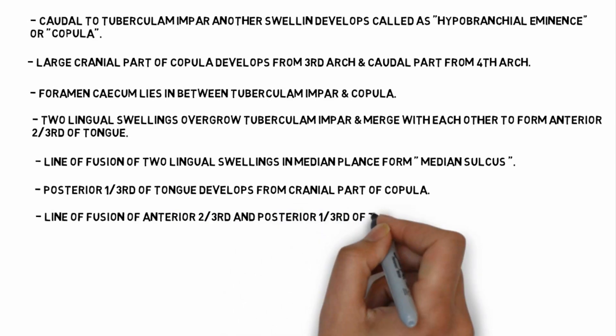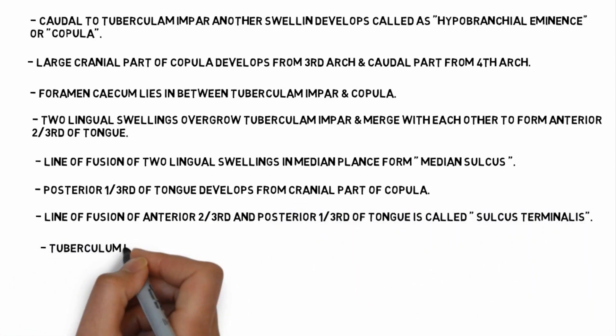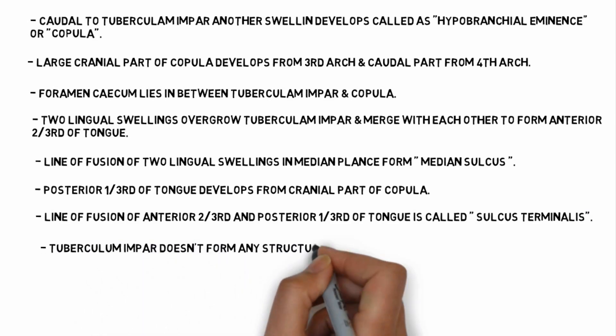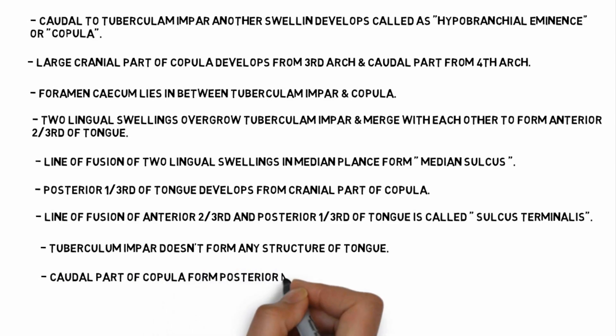Posterior one-third of tongue develops from cranial part of copula. The line of fusion of anterior two-third and posterior one-third of tongue is called sulcus terminalis.